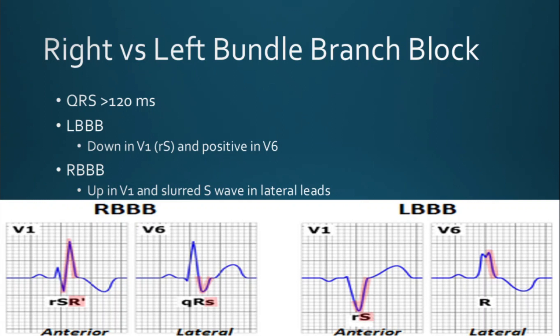An easy way to remember these is to think about driving. If you use a turn signal to turn right, you push it up — so in a right bundle branch block, the QRS will be up in V1. To turn left, you pull the signal down — so the QRS will be down in a left bundle branch block. You can see the slurring of the S wave here, a positive QRS in V1, and you could get an RSR prime pattern. There are different morphologies of right bundle branch blocks. And in the left bundle branch block: down in V1, up in V6.